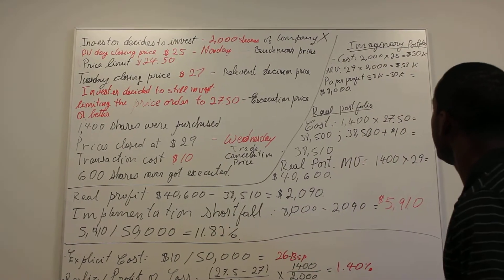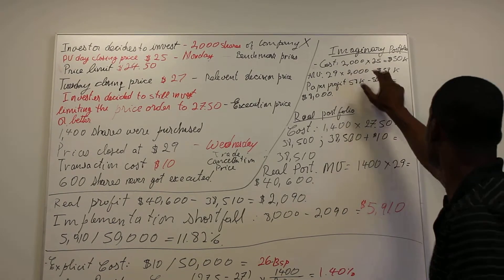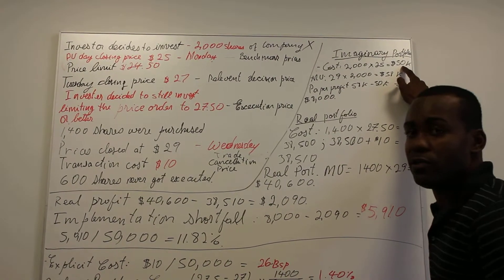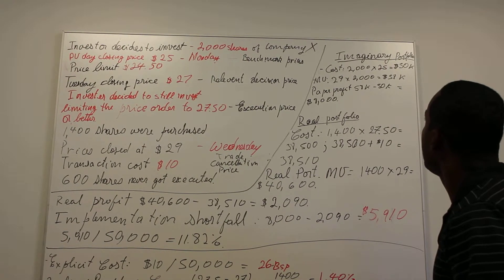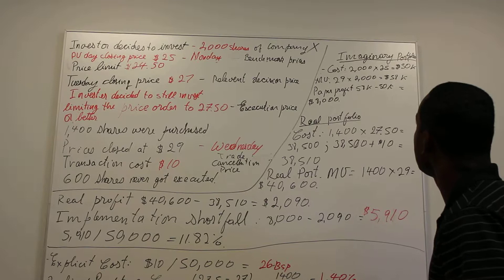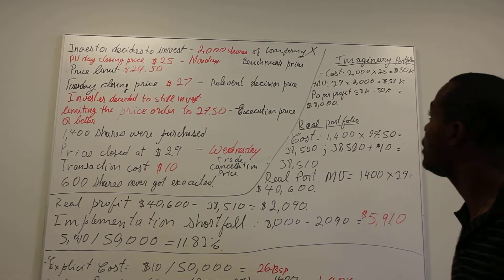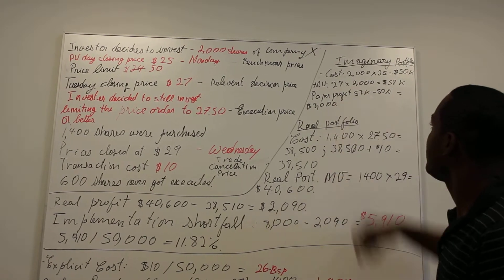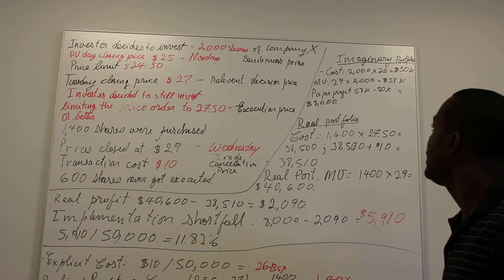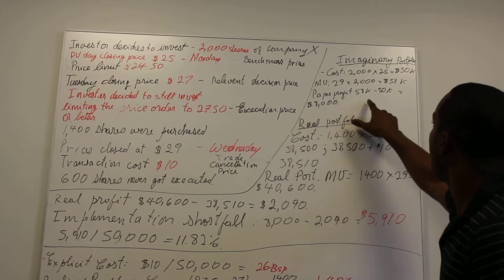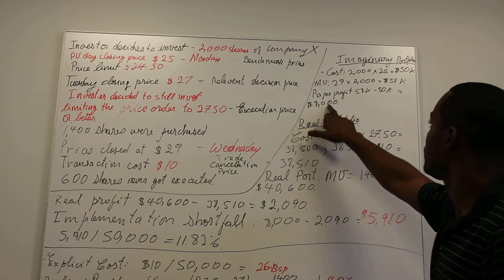The imaginary portfolio assumes that 2,000 shares were purchased at $25, the benchmark price. That would have cost $50,000 to establish. On Wednesday night, when prices closed at $29, that imaginary portfolio's market value would be $29 times 2,000 shares, equaling $58,000. The paper portfolio would have generated a profit of $58,000 minus $50,000, which is $8,000.